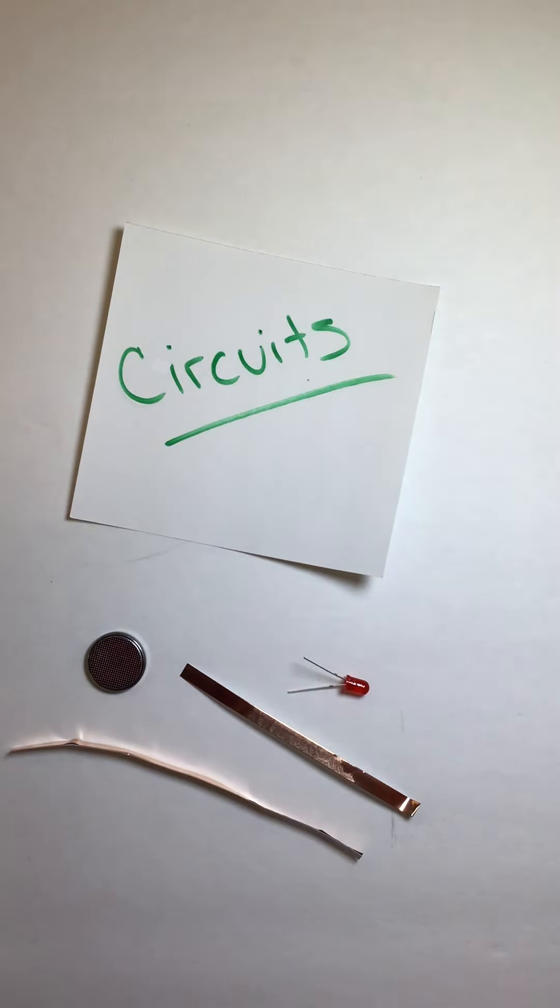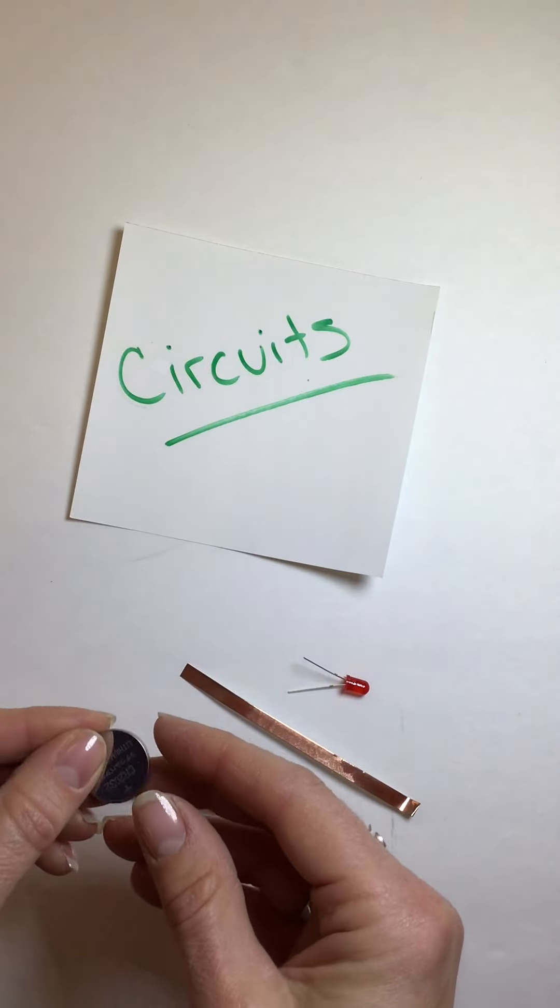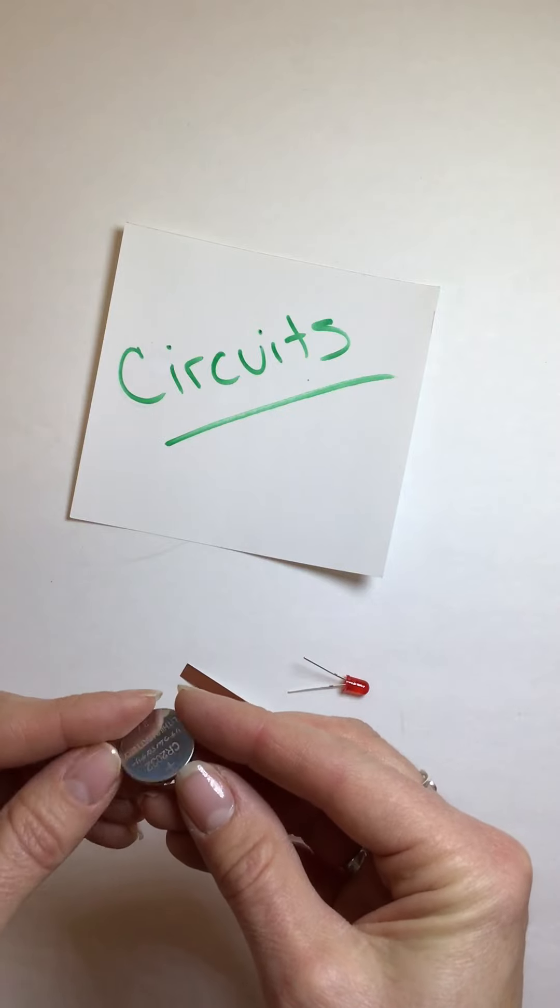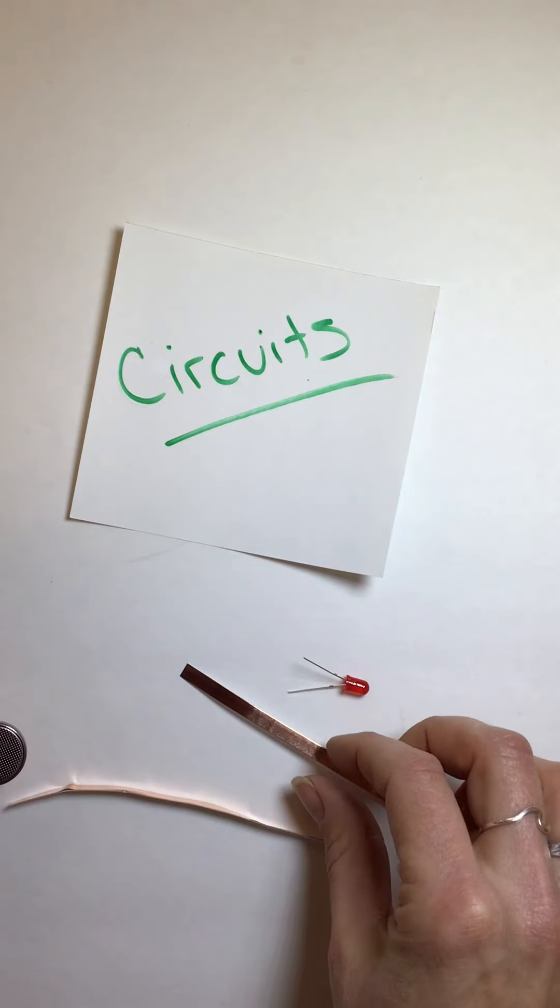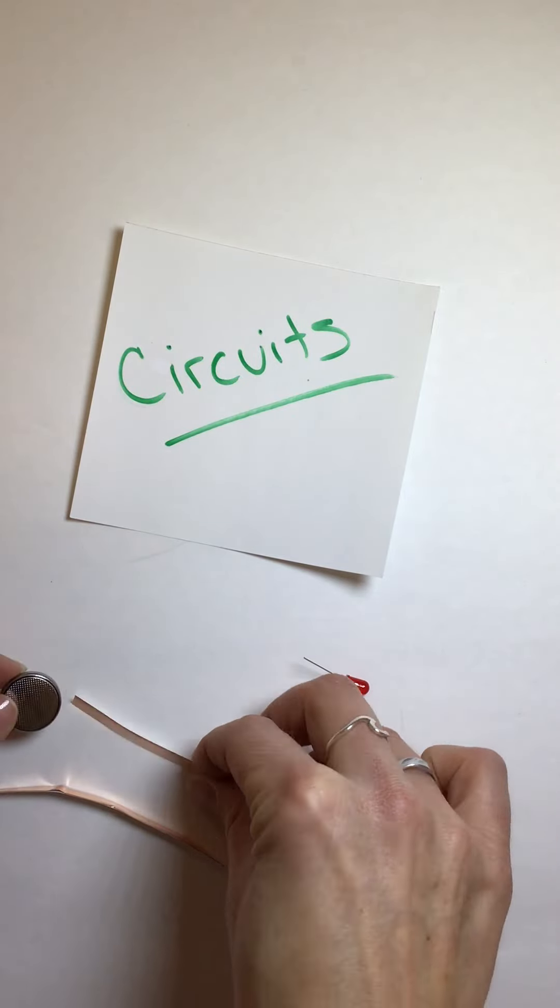So let's build a basic circuit. I have a battery. And a battery has a plus side and it has a minus side. If I connect my path to one side of it, I connect my path to the other side of it.